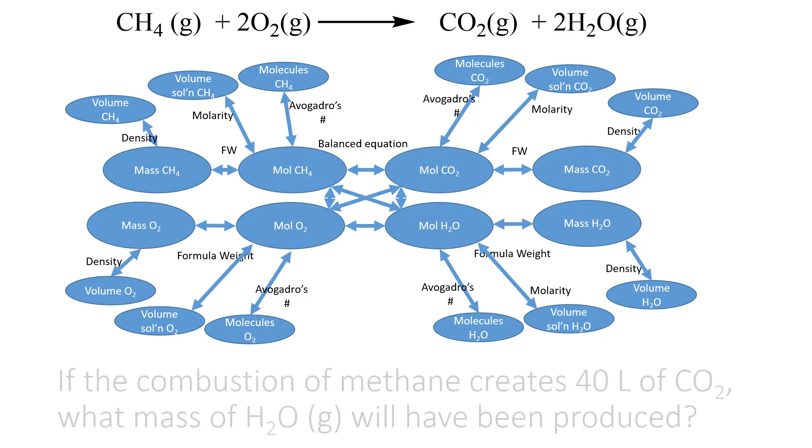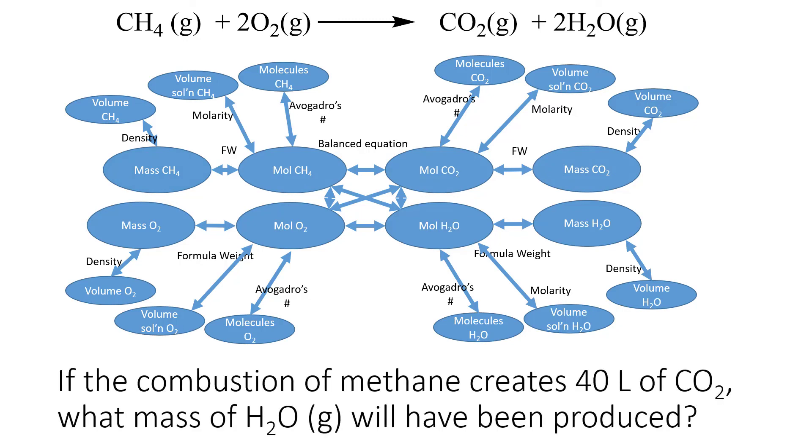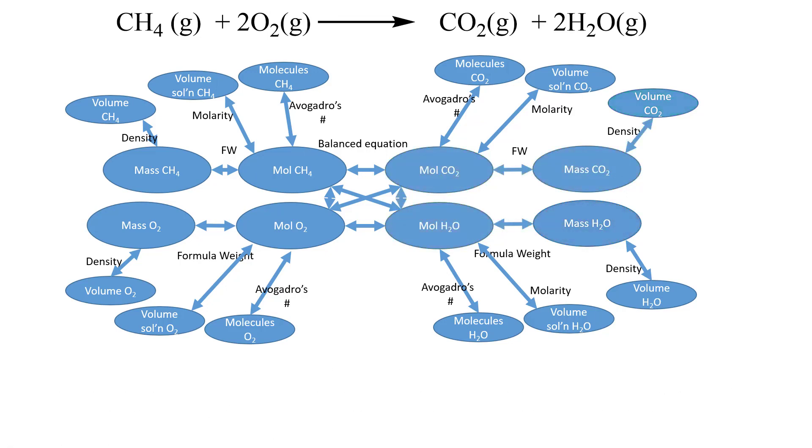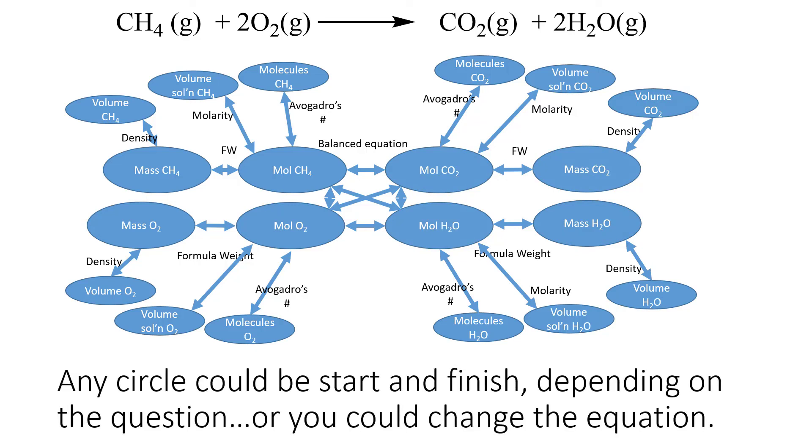You can imagine that there could be some other kinds of questions that might be asked. If the combustion of methane created 40 liters of CO2, what mass of water would have been produced? We have to find our starting point and our ending point, and then we look for that path that connects those two. What's important about this is that really any of these circles could be your start, and any circle could be your finish, depending on how evil your faculty member is feeling. Or we could just change the equation, and that sort of changes the relationship here. It's really useful to sort of see how all these kinds of questions fit together. When we talk about stoichiometry, it's just really talking about doing these interconversions and having this core piece in the middle where we're using a balanced equation to understand the relationships between each other.